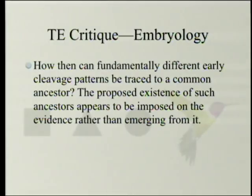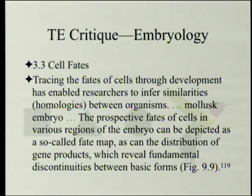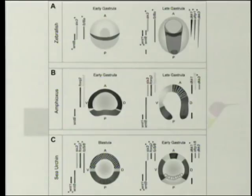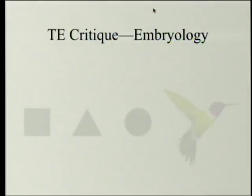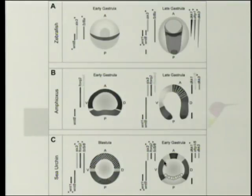Cell fates: tracing the fates of cells through development has enabled researchers to infer similarities or homologies between organisms. The prospective fates of cells in various regions of the embryo can be depicted as a fate map, as can the distribution of gene products — which reveal fundamental discontinuities between basic forms. The author shows early gastrula of zebrafish, amphioxus (an early vertebrate), and a sea urchin, illustrating which genes are active where.